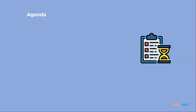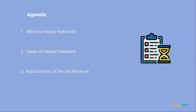Here's what's in store: first, we will understand what a neural network is, then the types of neural networks, and finally applications of neural networks. Before we get started, a simple question for AI and neural network aspirants: which is the first patented robot in the world? Let us know in the comments. Here's a hint — it is not Frankenstein.